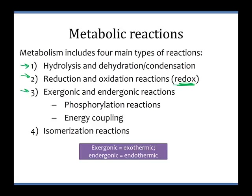We're going to look at exergonic and endergonic reactions, the most important of which is phosphorylation — a subcategory of exergonic and endergonic reactions. Then we'll look at isomerization reactions. You may have learned the terms exothermic and endothermic in chemistry class. For our purposes, we can use exothermic and exergonic pretty much interchangeably, and endothermic and endergonic interchangeably. Exergonic means to release energy; exothermic means to specifically release heat.